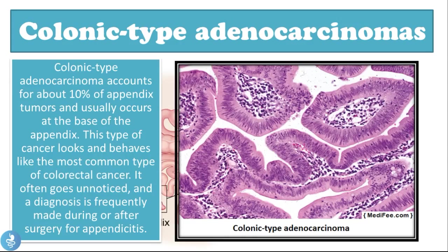Colonic type adenocarcinoma accounts for about 10% of appendix tumors and usually occurs at the base of the appendix — unlike carcinoid tumors, which occur at the tip. This type of cancer looks and behaves like the most common type of colorectal cancer. It often goes unnoticed, and a diagnosis is frequently made during or after surgery for appendicitis.